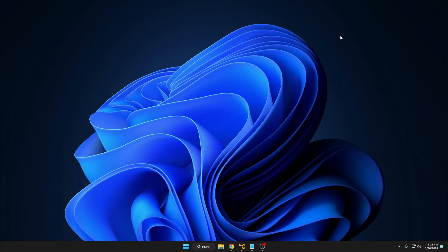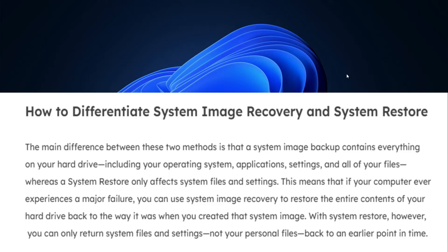The main difference is that system image recovery contains everything on your hard drive or SSD, including your operating system, applications, settings, and all your personal files and data. System restore only affects system files and settings. This means that if your computer ever experiences a major failure, you can use system image recovery to restore the entire contents of your hard drive back to the way it was when you created the image. With system restore, you can only return system files and settings — not your personal files — to an earlier point in time.